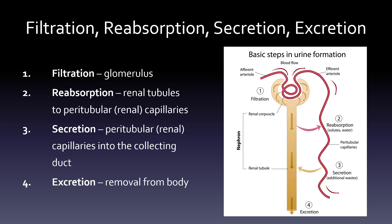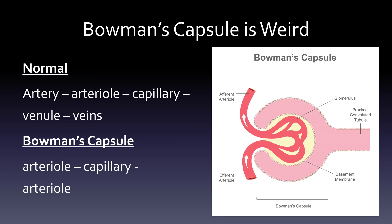This should look a little weird to you. At some point in anatomy class you learned that an artery went to an arteriole, then a capillary, then a venule, then veins. But Bowman's capsule actually has an efferent and afferent arteriole — arteriole to capillary to arteriole — which creates a really high-pressure system, much like a garden hose.